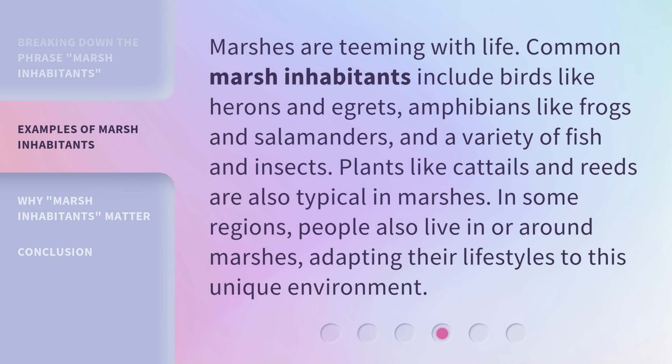Marshes are teeming with life. Common marsh inhabitants include birds like herons and egrets, amphibians like frogs and salamanders, and a variety of fish and insects. Plants like cattails and reeds are also typical in marshes. In some regions, people also live in or around marshes, adapting their lifestyles to this unique environment.